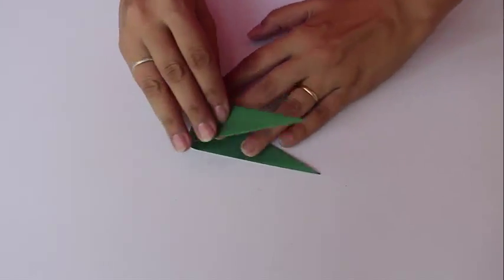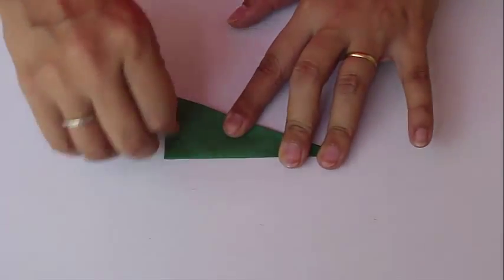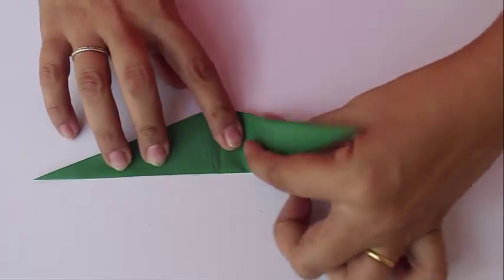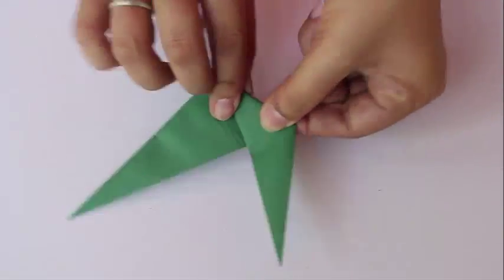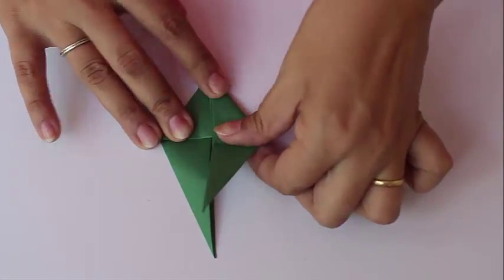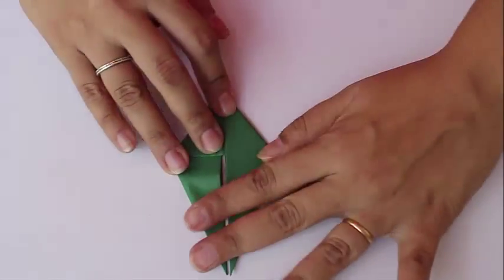Now get the right side down to meet the central line. Turn it over. And again get the right side down to meet the central line. This is important. Once you've finished with your module, make the rest of the four modules also identically.